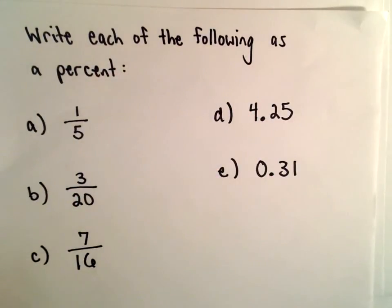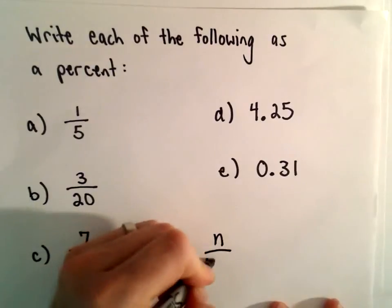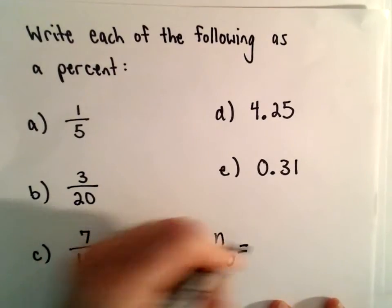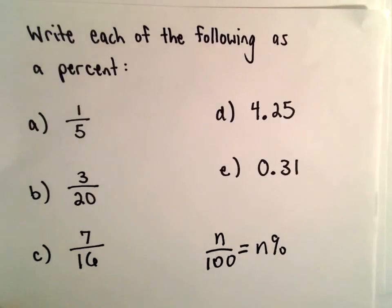There's different strategies we can do. We've seen that if you put a number over 100, whatever number's on top, so if we have n over 100, whatever number's on top is the percentage.